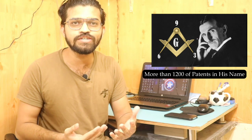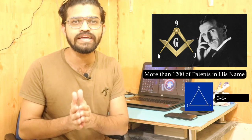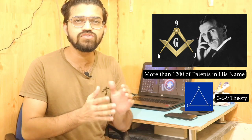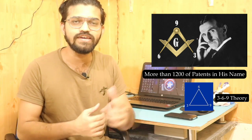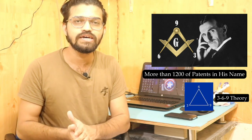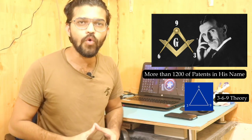Nikola Tesla conducted a lot of experiments and has more than 1,200 patents in his name. How was Tesla able to achieve all of his inventions and goals? Basically, Tesla followed the 369 theory and did everything in sets of three, six, and nine. Now we are talking about the time and space correlation of this particular 369 theory.